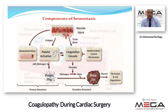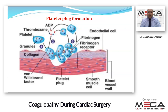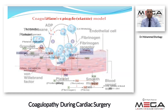About platelet plug formation: it is formed by platelet adhesion via von Willebrand factor, then platelet aggregation with ADP and thromboxane A2 release, and finally fibrinogen forming fibrinous strands that make the final pathway of clot formation.